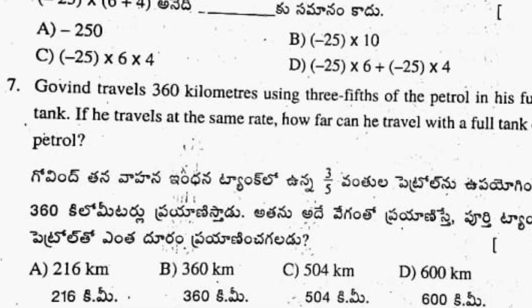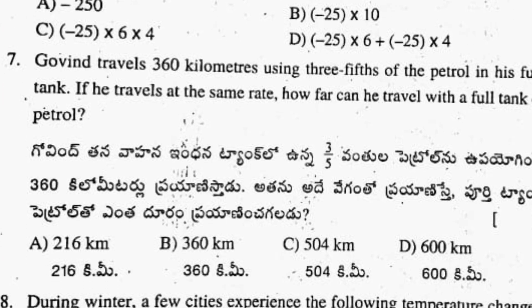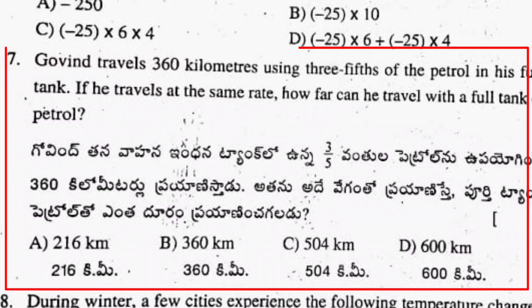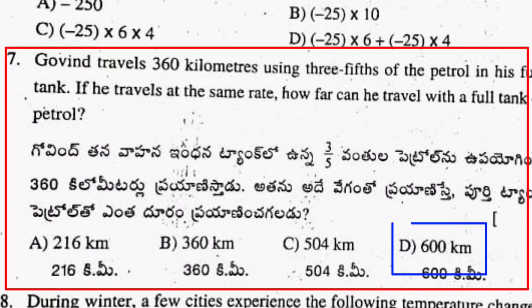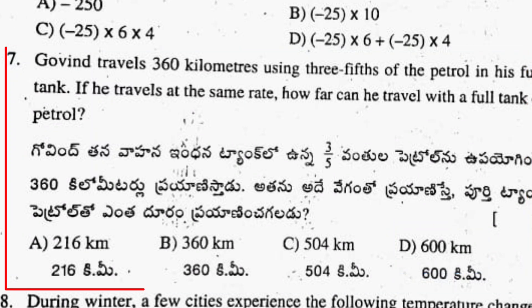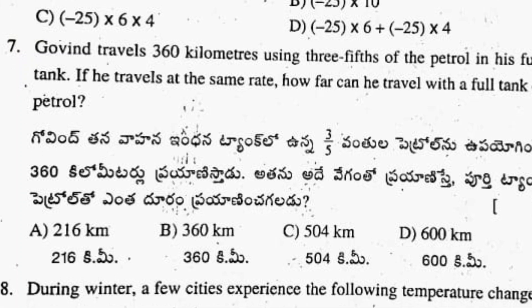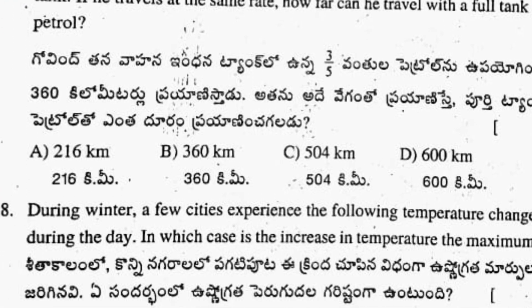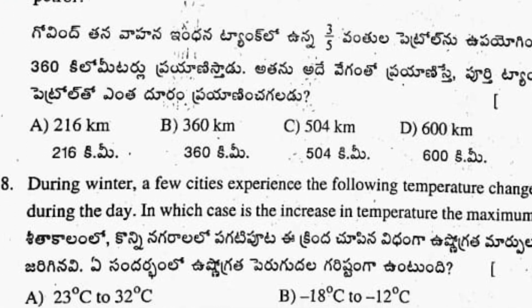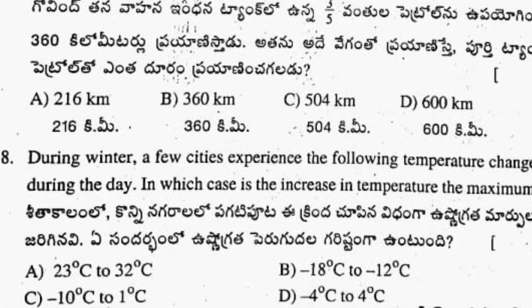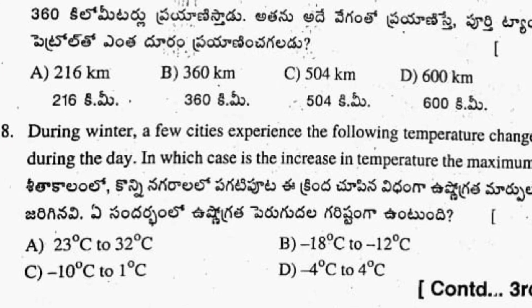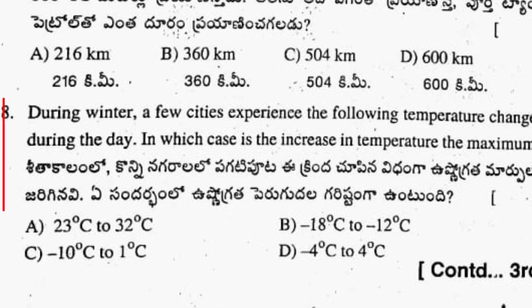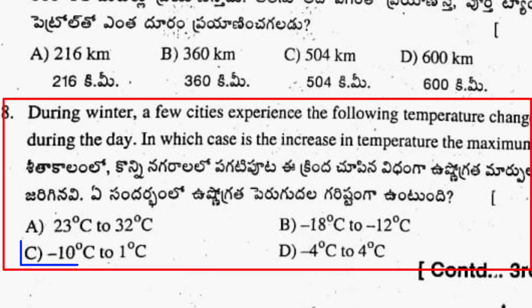Seventh question: option D is the correct answer, 600 km. Next, eighth question: option C is the correct answer.